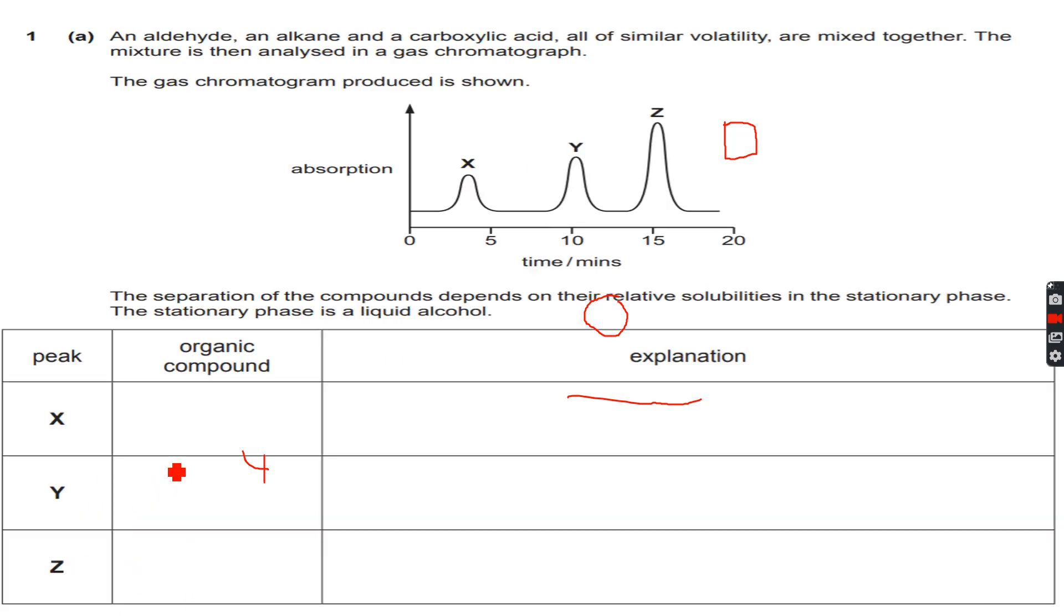Let's move to the next one, this is the last question. An aldehyde is CH3CHO for example, an alkane CH3CH3, and a carboxylic acid CH3CO2H. Let's keep the number of carbon atoms the same for comparison. Let's look at the polarities first. This will be most polar, two oxygen atoms.